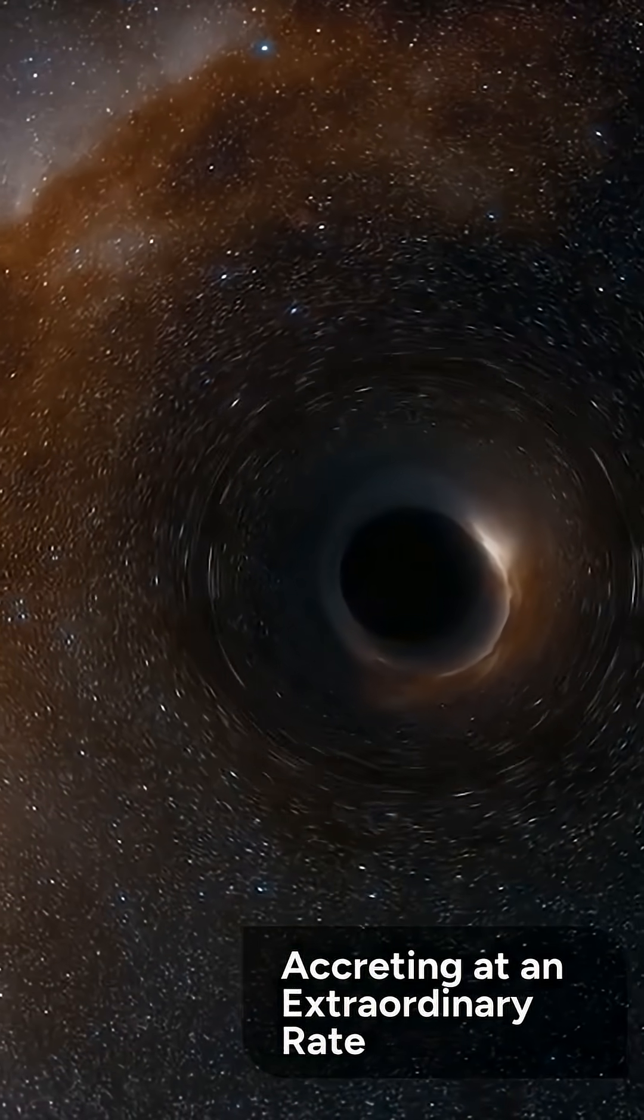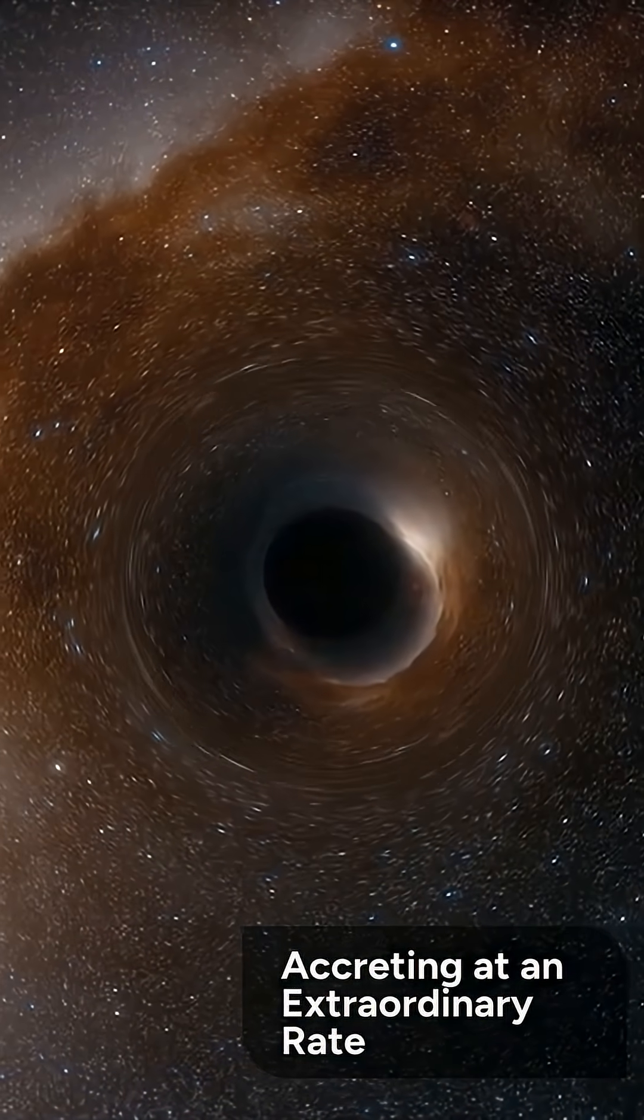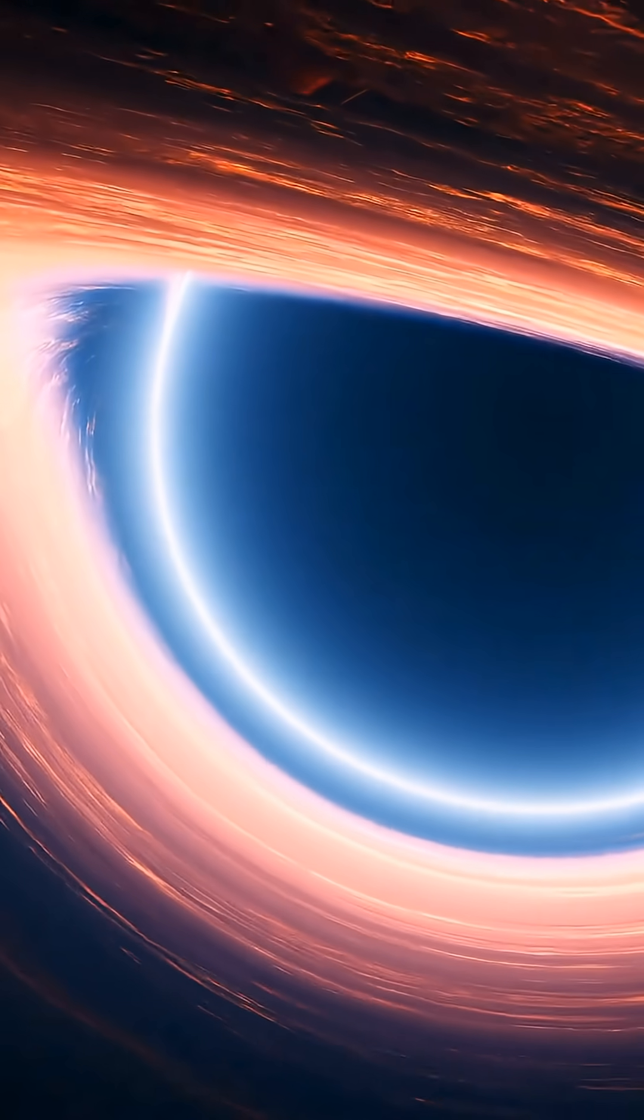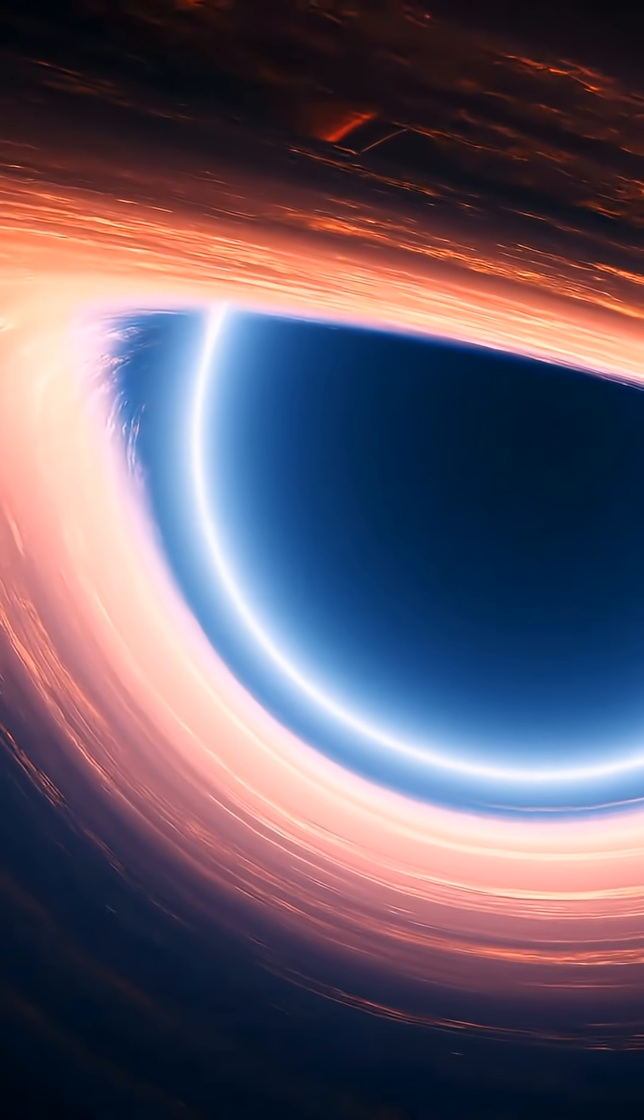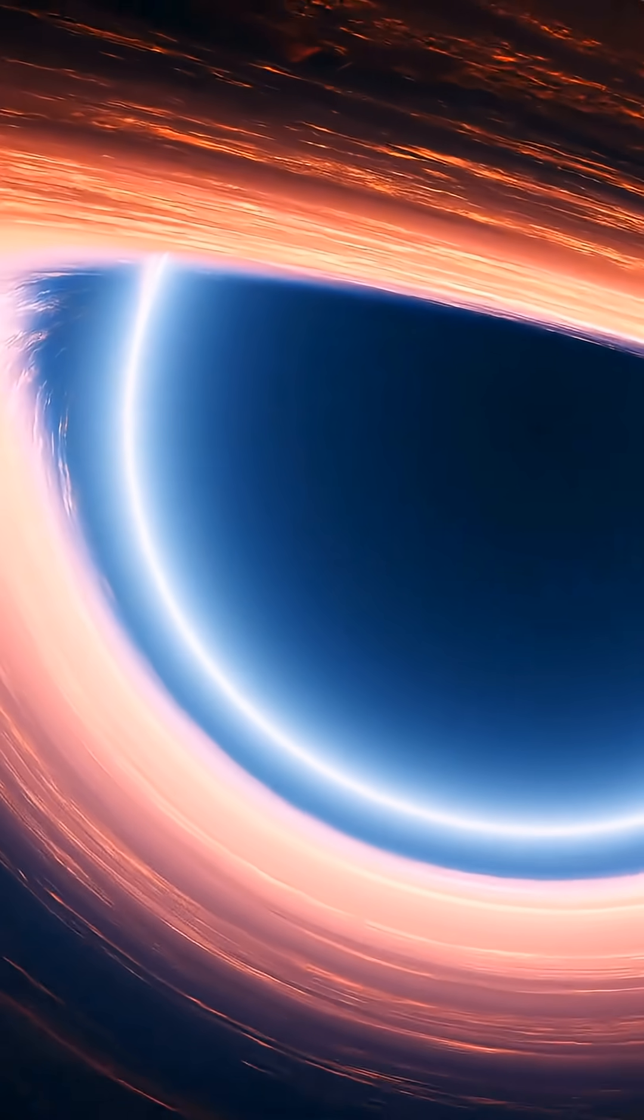The black hole is accreting material at an extraordinary, unprecedented rate. What made it hard to see initially? Thick veils of dust are obscuring the immense energy output from the feeding black hole.